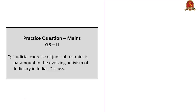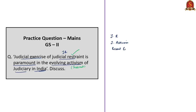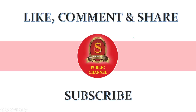Moving on to the mains question: 'Exercise of judicial restraint is paramount in the evolving activism of judiciary in India. Discuss.' This question speaks about the necessity of exercising judicial restraint and indirectly mentions recent happenings of judicial activism in India. Explain what is meant by judicial restraint and judicial activism, and how recent examples of judicial activism are becoming a challenge. Mention the challenges India faces because of judicial activism, the examples of judicial activism discussed in our editorial, and finally conclude about the necessity for the judiciary to exercise judicial restraint rather than judicial activism. With this, we come to the end of the analysis of the news articles taken up for today's discussion.